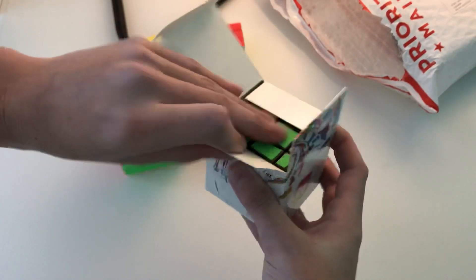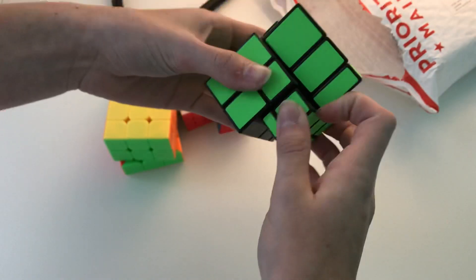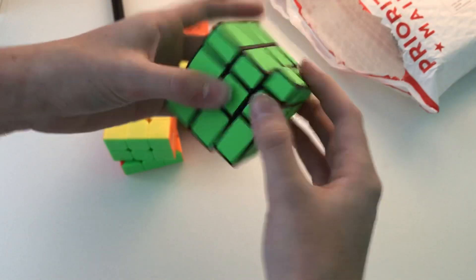And the next thing we have in here is the Z-cube mirror cube. So this has kind of textured stickers, which is something I wasn't expecting. And this turns pretty nicely.